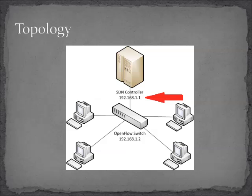This is our little SDN topology, and remember that the link there is between the controller and the switch — this is our OpenFlow channel. Pay attention to the IP addresses: 1.1 will be our controller, and 1.2 will be the OpenFlow switch, or OVS.